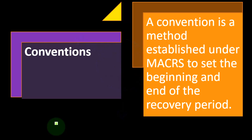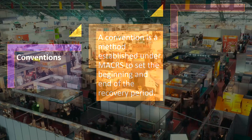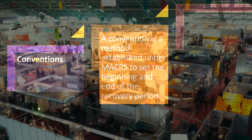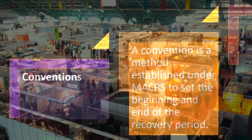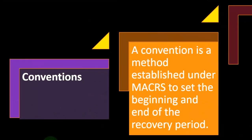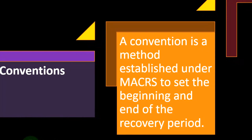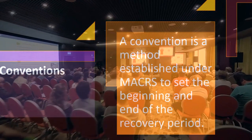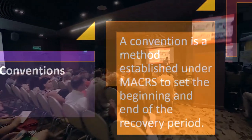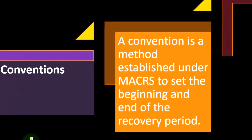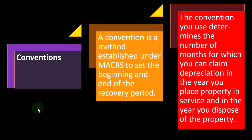We're now continuing on with the conventions. Conventions are the primary concept we're going to use under MACRS to depreciate property. It still uses general accounting concepts like straight-line versus double declining balance, and then a convention is involved that simplifies things — instead of calculating a precise date like February 21st and dealing with fractions of a month, we assume the property was purchased in the middle of the year, the middle of the quarter, or the middle of the month as the case may be. A convention is a method established under MACRS to set the beginning and ending of the recovery period, making it a bit easier without those odd fragments of the year.